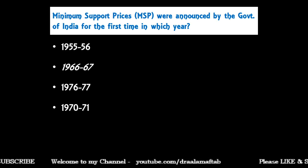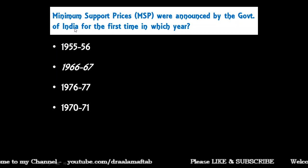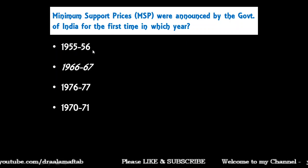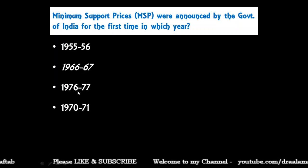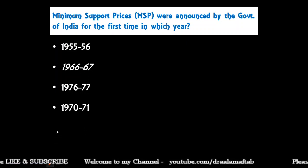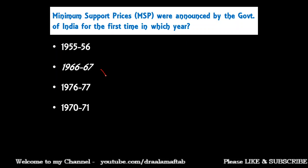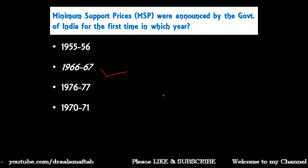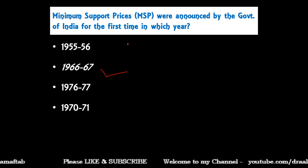Minimum Support Prices were announced by the Government of India for the first time in which year — 1955-56, 1966-67, 1976-77, or 1970-71? The correct answer is 1966-67. For the first time, the Government of India announced MSP in 1966-67.